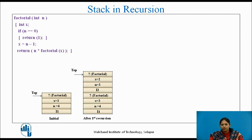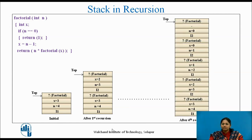For the second recursion call, you can see that the stack has grown by size 4 again. i2 is indicating the return address, n is now reduced to 3, and x is now equal to n minus 1, that is 2. Now top is pointing to factorial which has to be calculated. After the fourth recursion call, the stack has still grown; n is equal to 0, which is the base case, and top is pointing to factorial which has to be calculated. This is how the stack grows for each recursion call.